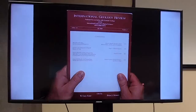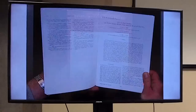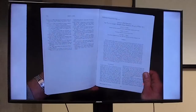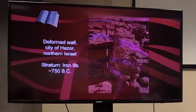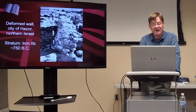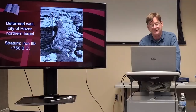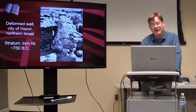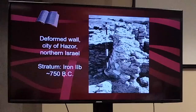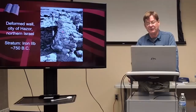Gordon Franz and I, with a professor at San Diego State, wrote an article called 'Amos's Earthquake: An Extraordinary Middle East Seismic Event of 750 B.C.' We included earthquake damage from Amos's time. At Hazor, the excavation director noted a leaning wall in the Iron 2B stratum, dated to about 750 B.C., the time of Uzziah and Amos. This was recognized by Yadin, the excavator, to be earthquake evidence.